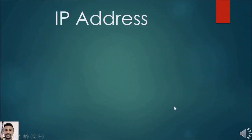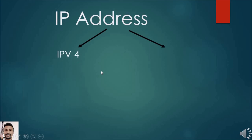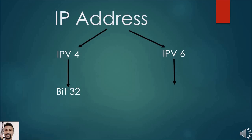IP addresses can be used to identify a computer or computing device uniquely inside a network. There are two types of IP addresses: IPv4 and IPv6. IPv4 addresses use 32 bits to represent the addresses, and IPv6 uses 128 bits to represent the addresses. According to our syllabus, we are going to discuss IPv4 addresses.